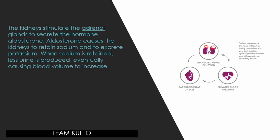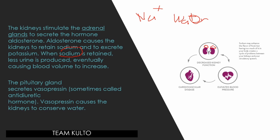Remember from our very first fluid and electrolytes discussion where we discussed hypotonic, isotonic, and hypertonic solution — sodium and water are best friends. Wherever sodium is, water will follow. The pituitary gland also secretes vasopressin, sometimes called antidiuretic hormone. Vasopressin causes the kidneys to conserve water, thereby increasing blood volume. This is the natural process of the body whenever there is decreased blood volume.